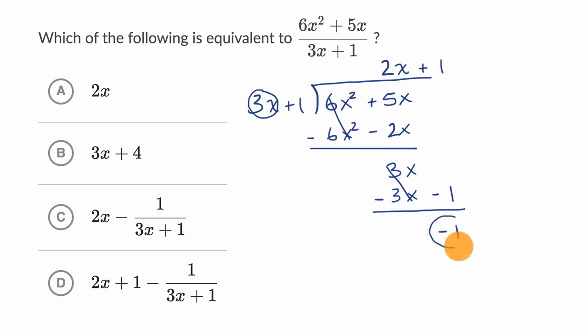So you could view that as the remainder. And so this whole thing is going to be equal to two x plus one and then minus one over three x plus one. Minus one over three x plus one. And you can see that this is choice D right over here.